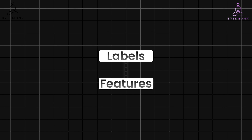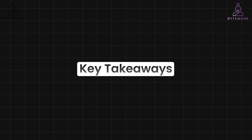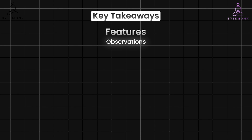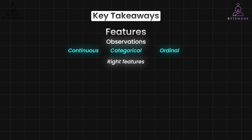Features and labels work together to train supervised learning models. Features provide the what and labels dictate the why — the why aspect highlights the purpose and direction labels give to features. Features on their own are just data points; the labels provide the context that transforms them into something the model can learn from. Key takeaways about features: they are the observations used to train the model, representing different characteristics of the data. They can be continuous, categorical, or ordinal. Choosing the right features is crucial, and in some cases you might need to engineer new features from raw data.